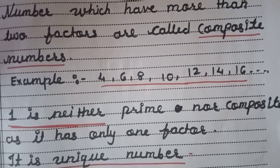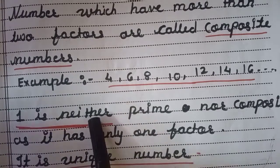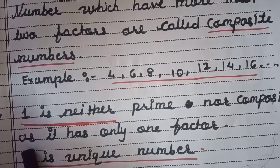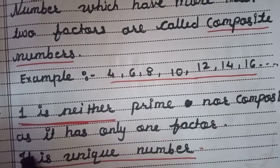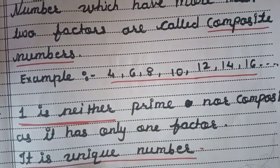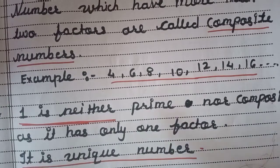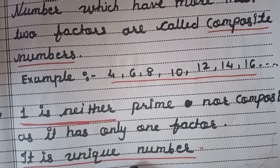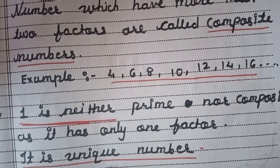Then next is 1. What is 1? 1 is neither prime nor composite, as it has only one factor. अभी 1 किसी के table में नहीं आता, वो only उसके खुद के table में आता है। इसलिए 1 it is a unique number. 1 is a unique number — ये आपको याद रखना है।